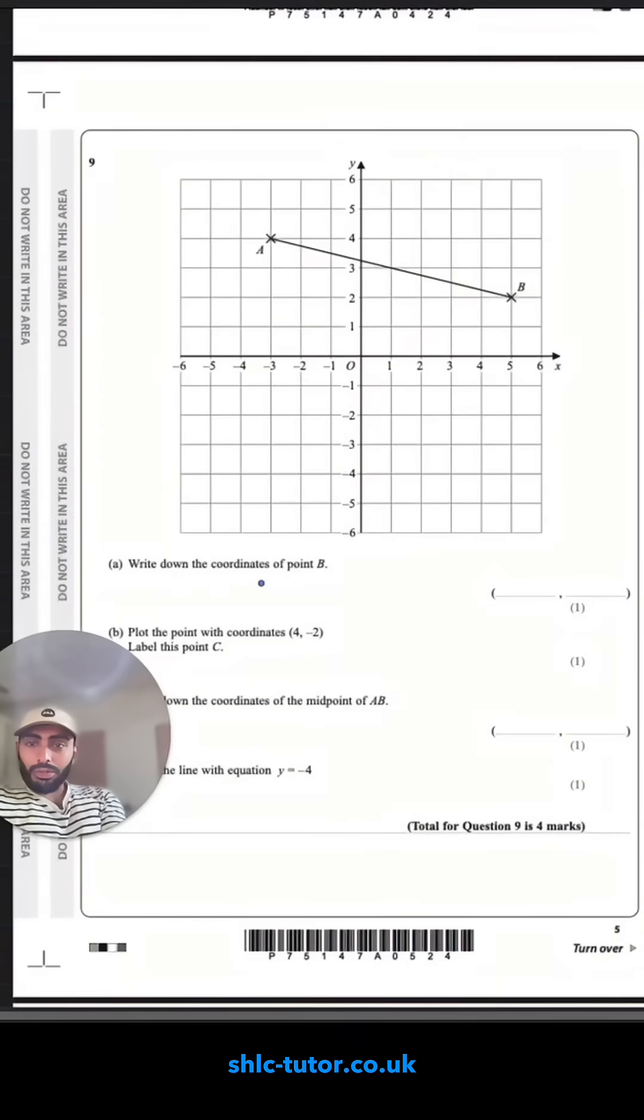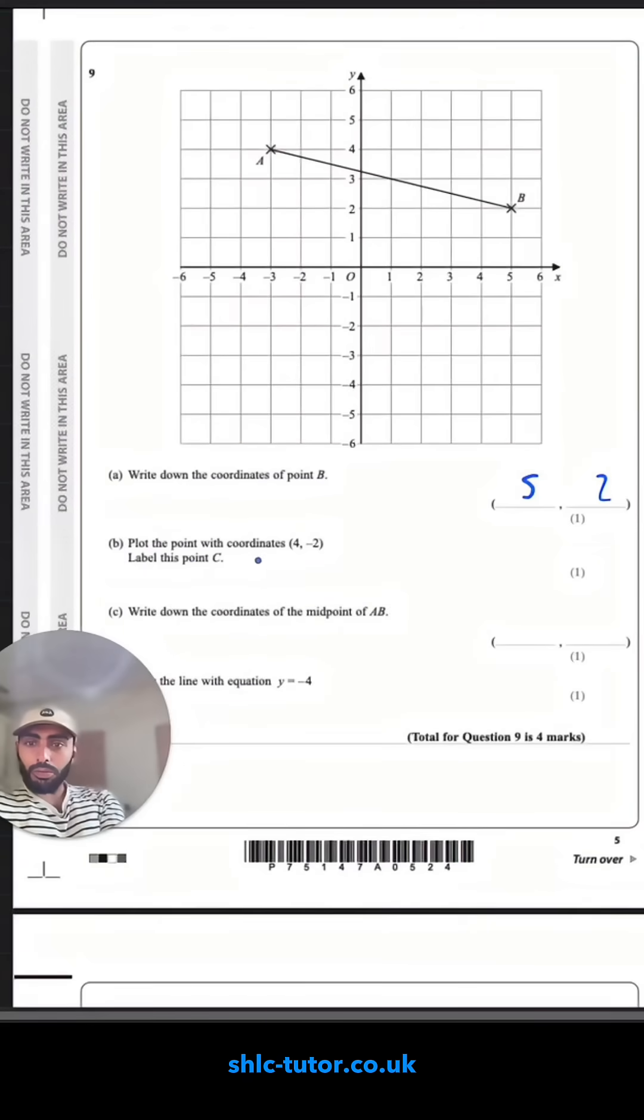Number nine, write down the coordinates of point B. Along the corridor up the stairs, 5, 2. Plot the point with coordinates 4, negative 2. Write down the coordinates of the midpoint of AB. I think I'd probably use a ruler, but I think it's going to be over there. 1, 3.